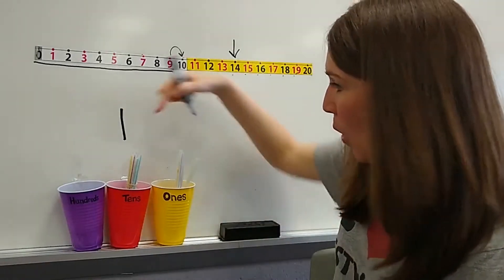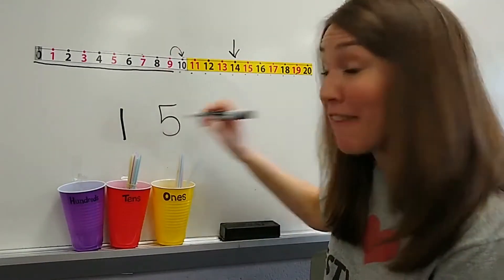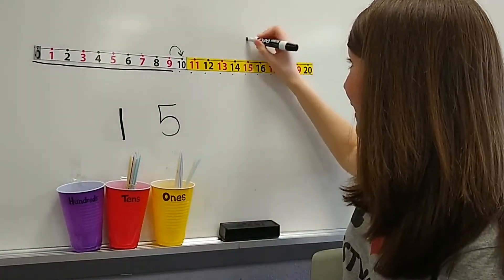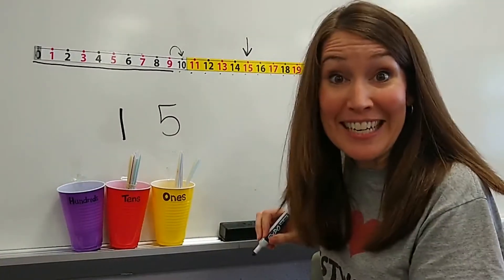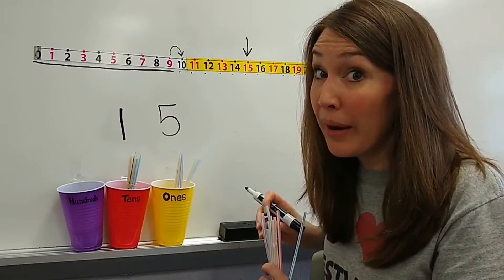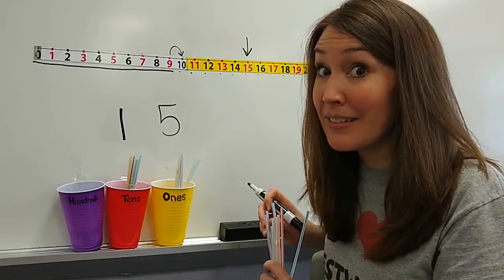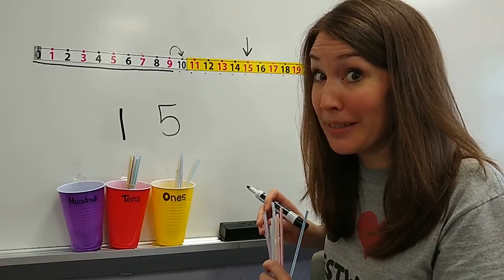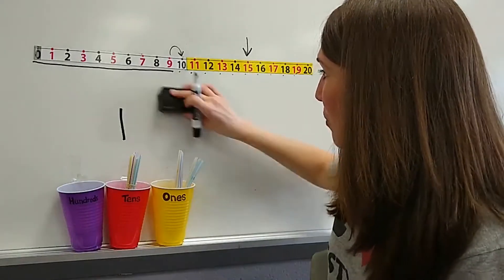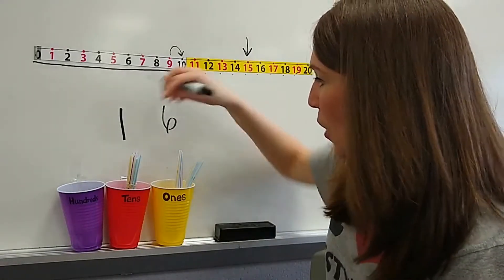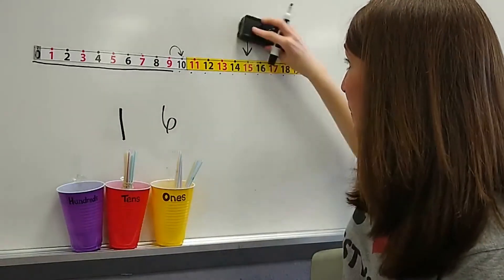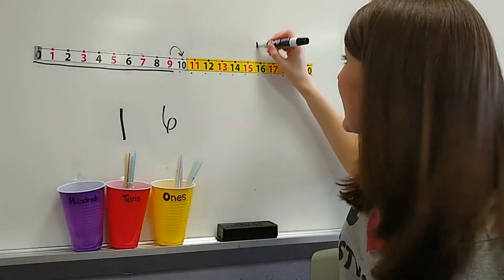Let's add another. Now I have one group of 10 and five little ones. My number is 15. Do you see how this works? We're going to keep going because I want to show you what happens when we get to 10 in the ones cup. Remember the magic happens then. So five and one more makes six. One group of 10 and six little ones. My number is 16.